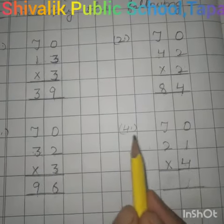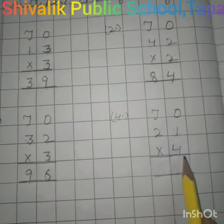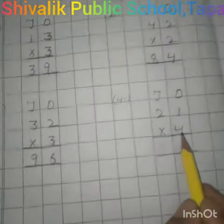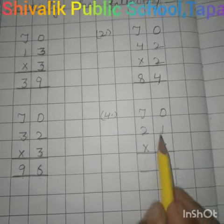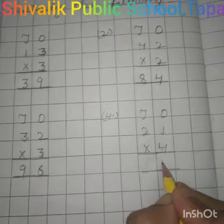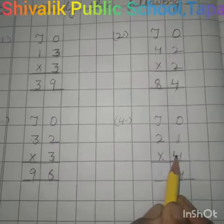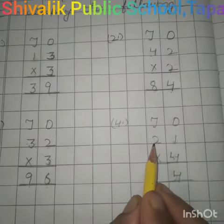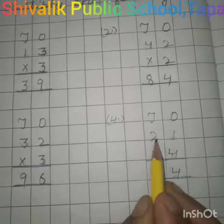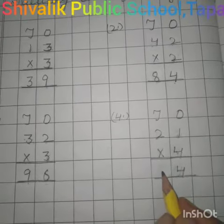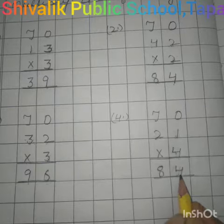4th and last sum: 21 into 4. Here we read the table of 4 up to 1s place, which is at 1. 4 ones are 4. We write here 4. Now we will read the table of 4 up to 10s place, which is at 2. 4 ones are 4, 4 twos are 8. We write here 8. Now the answer is 84.